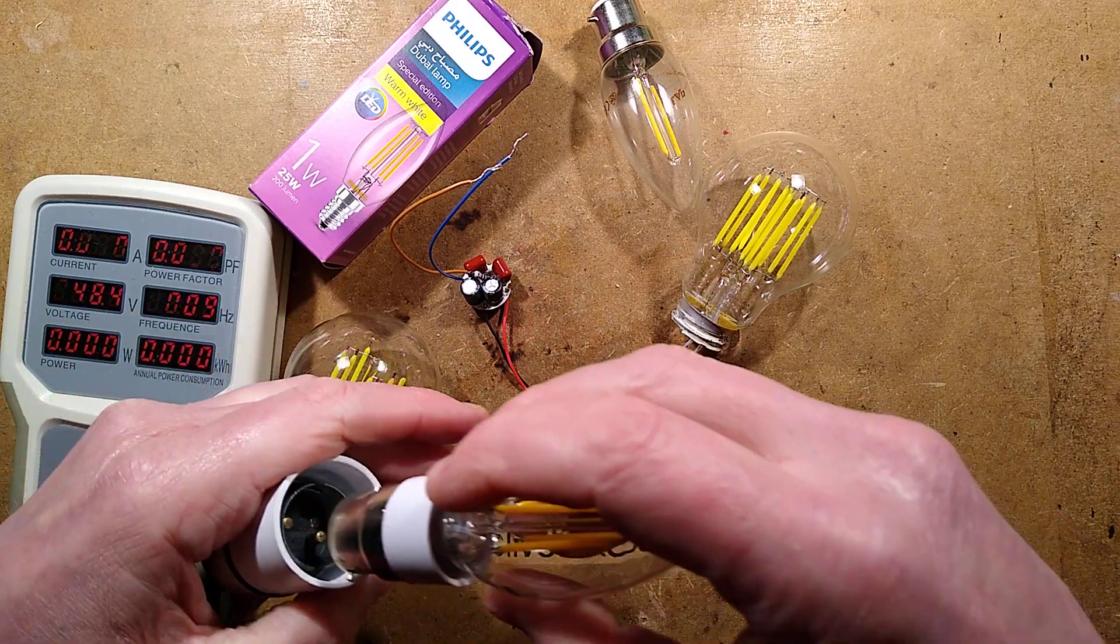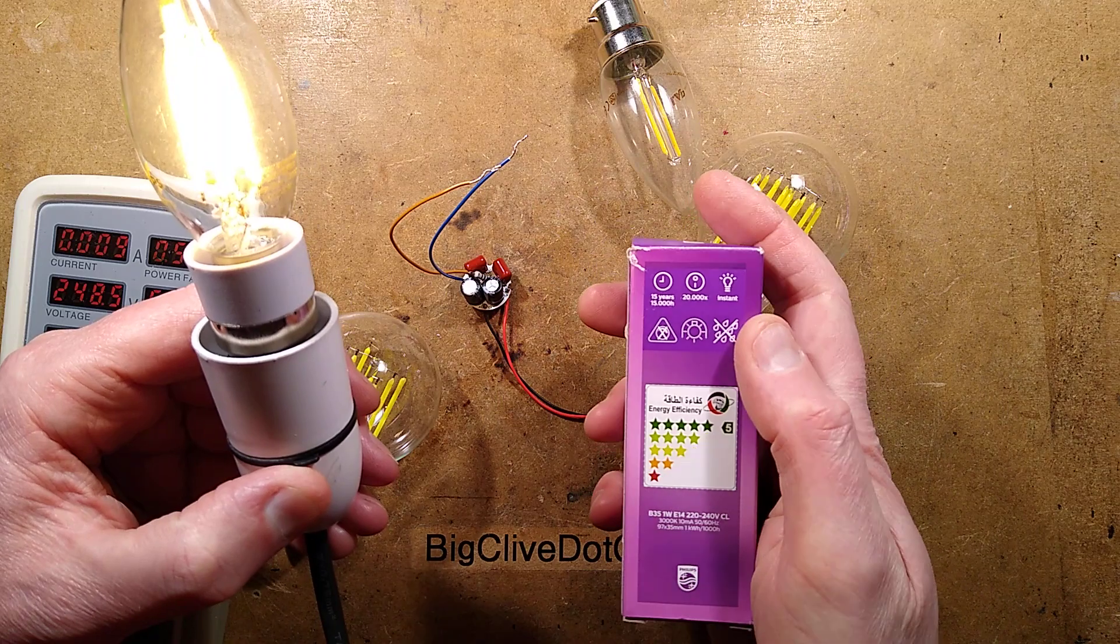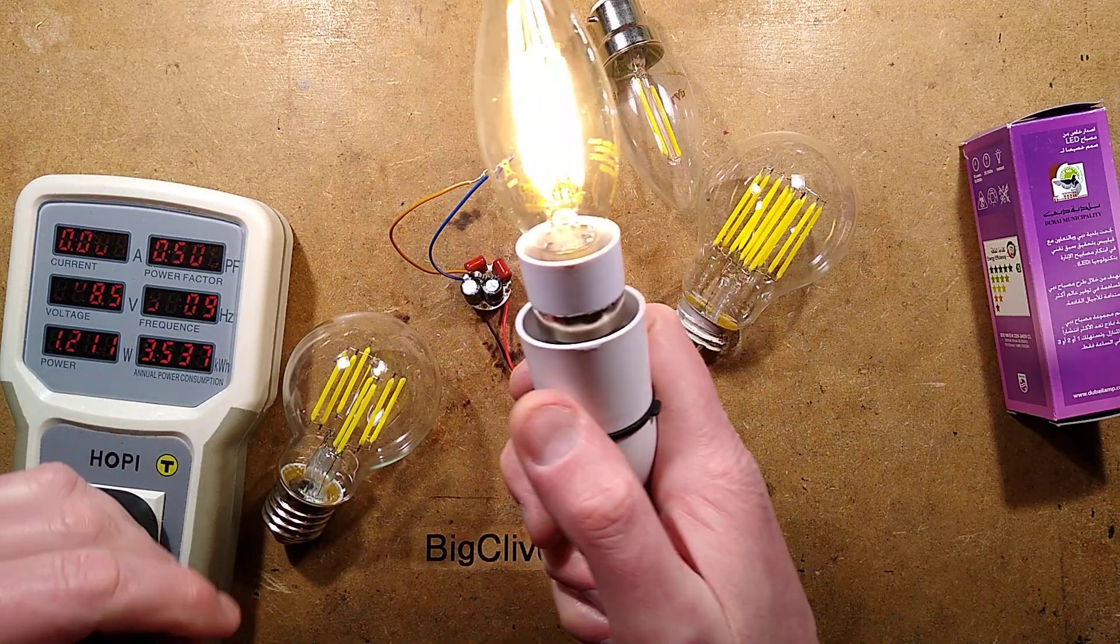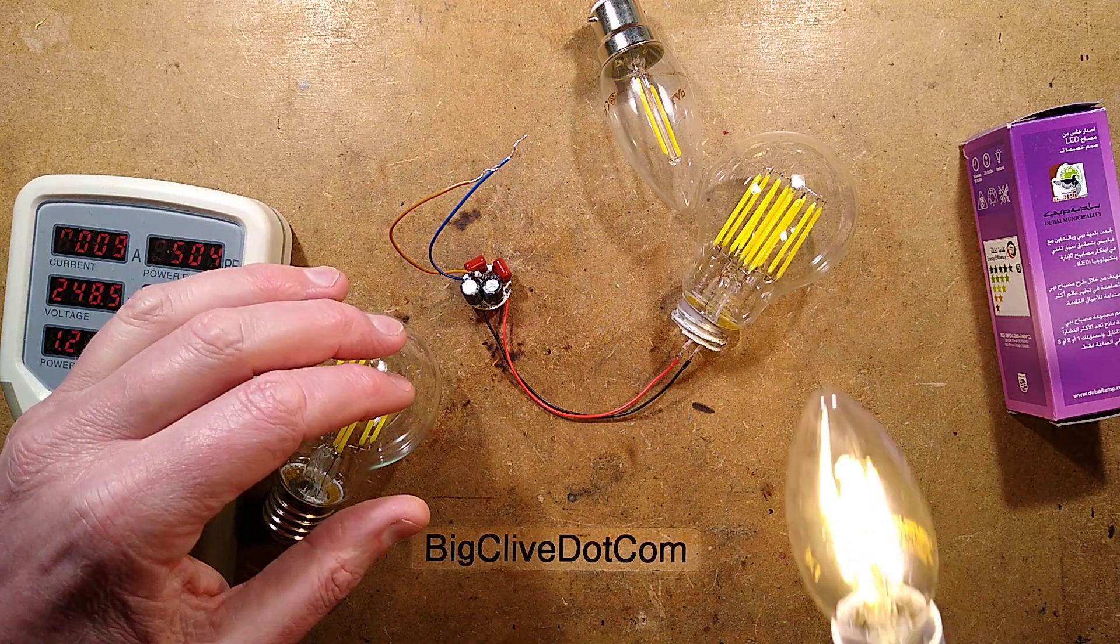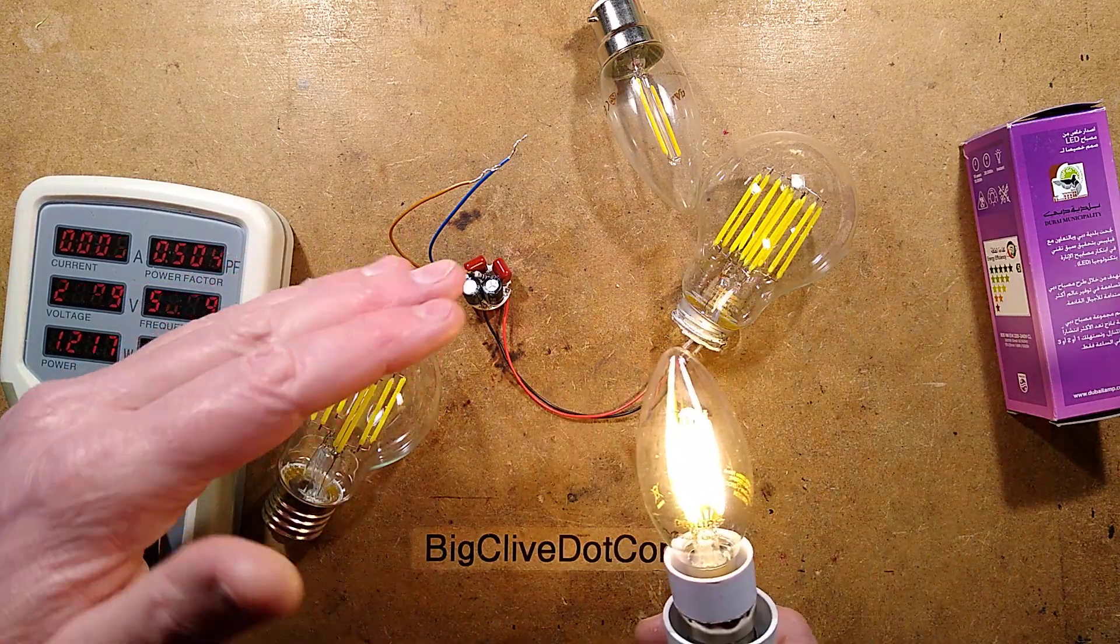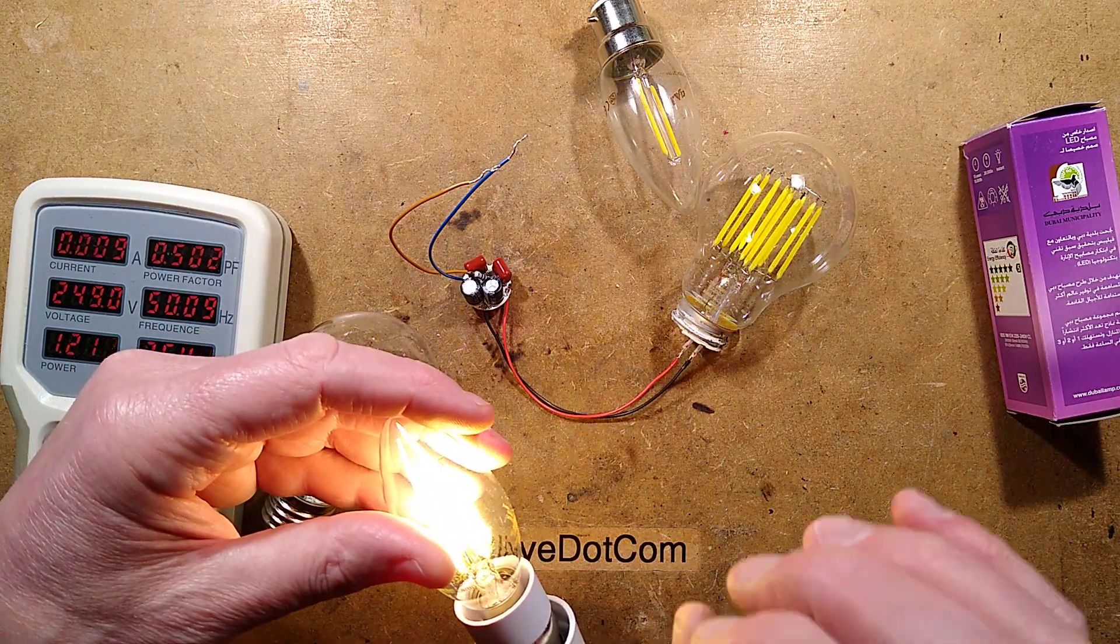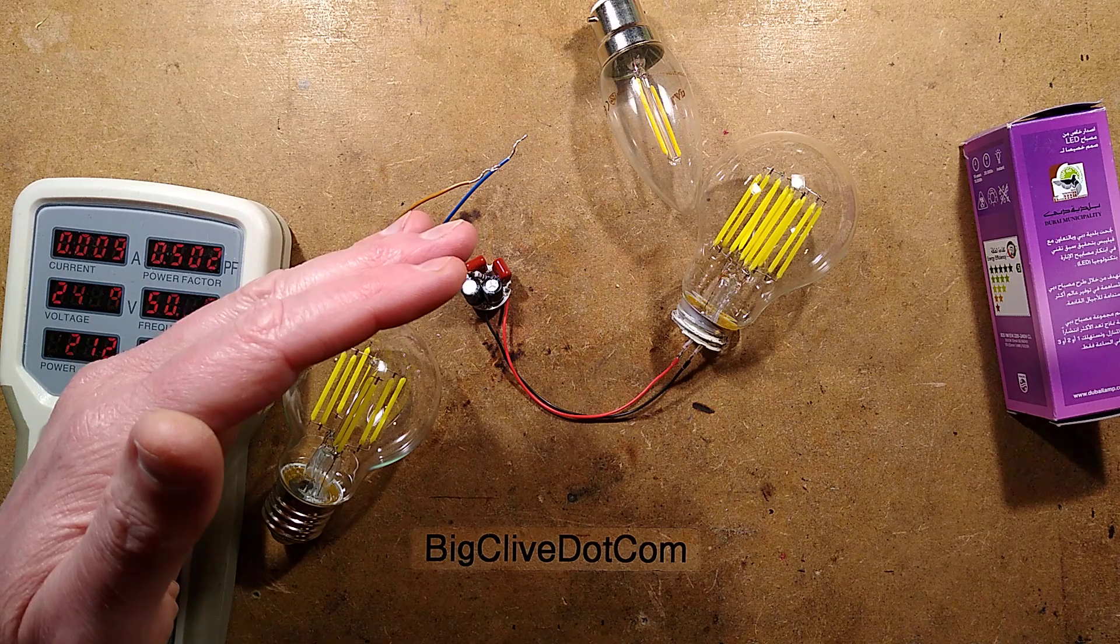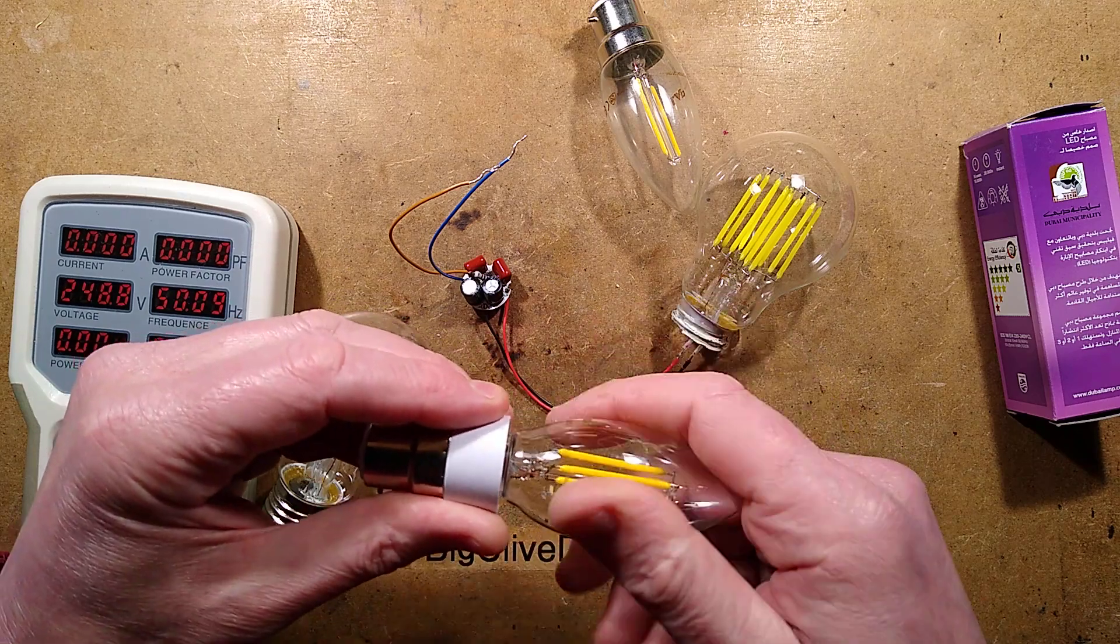I screw it in and it lights up—slightly colder warm white at 3000K. This one is drawing 1.2 watts, 9 milliamps, and again 0.5 power factor. When I take this off camera and shake it, I don't see a visible flicker. Off camera when I shake it, I'm not getting any flicker at all, which is really impressive.